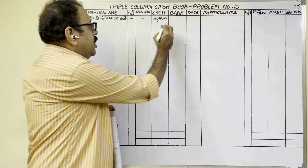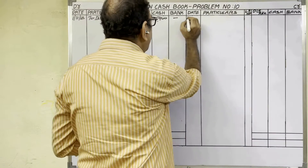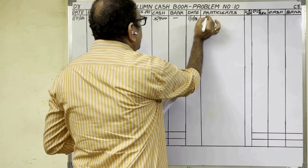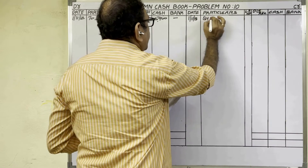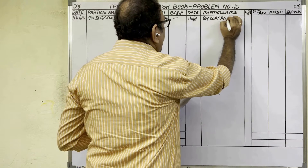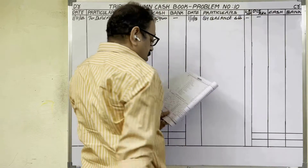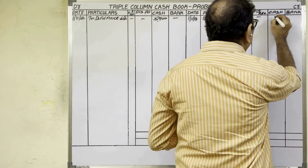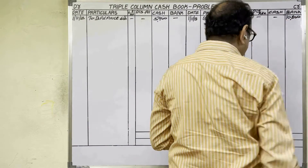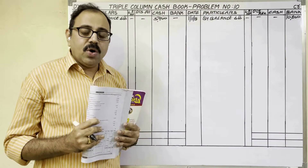On the debit side, don't write anything. On the credit side, since the date is not given, we take the same date. Write 'by balance brought down' because this is the opening bank balance, and in the bank column the amount is 10,800 rupees.